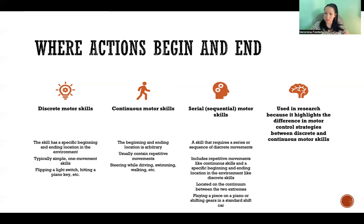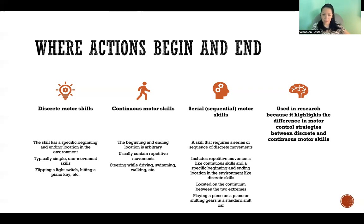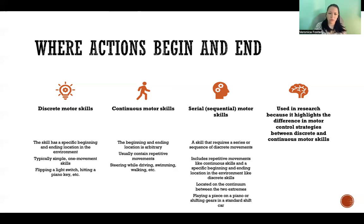A serial motor skill — also referred to as a sequential motor skill — is a skill that requires a series or sequence of discrete movements. If hitting one piano key is a discrete motor skill, then playing a whole piano piece would be a serial motor skill, because it requires many discrete movements done in the proper order, rhythm, and timing. It includes repetitive movements like continuous skills, but it also has a specific beginning and ending like discrete skills — so it falls somewhere in between.